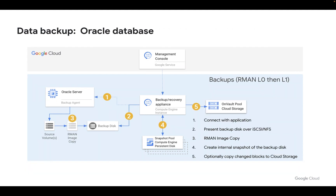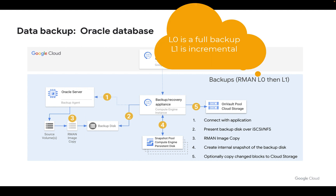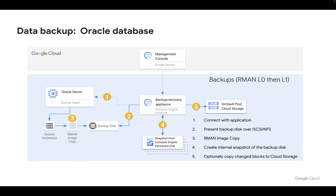In terms of Oracle, there's one significant difference: rather than use LVM snapshots, we instead use RMAN image copy. RMAN image copy can be run over either iSCSI or NFS, and effectively does exactly the same thing — we do a level zero backup first, and then a level one incremental after that, each time incrementally merging the changes to effectively create a full copy at every backup. Optionally, we can push those backups into cloud storage.